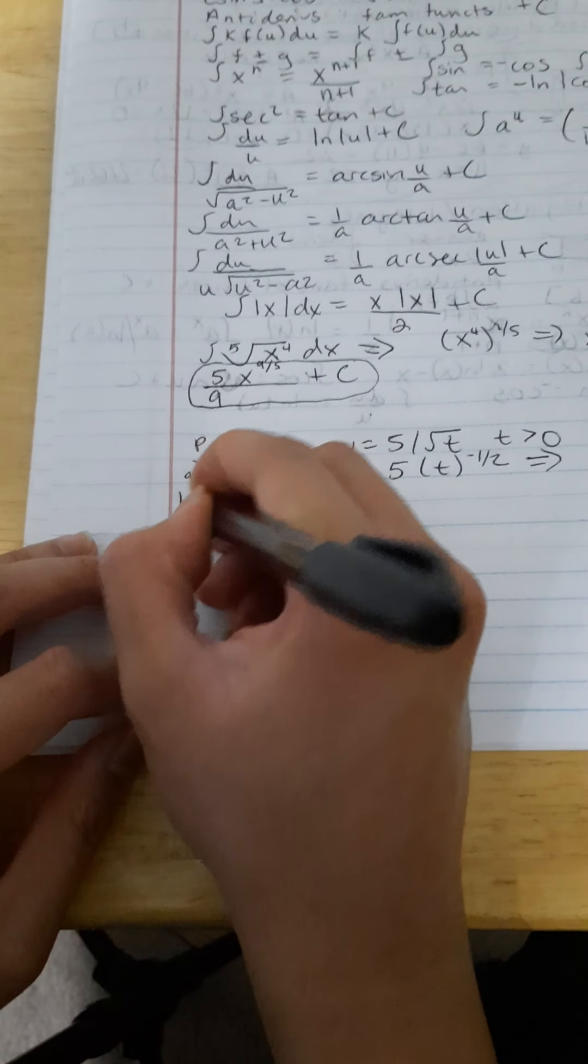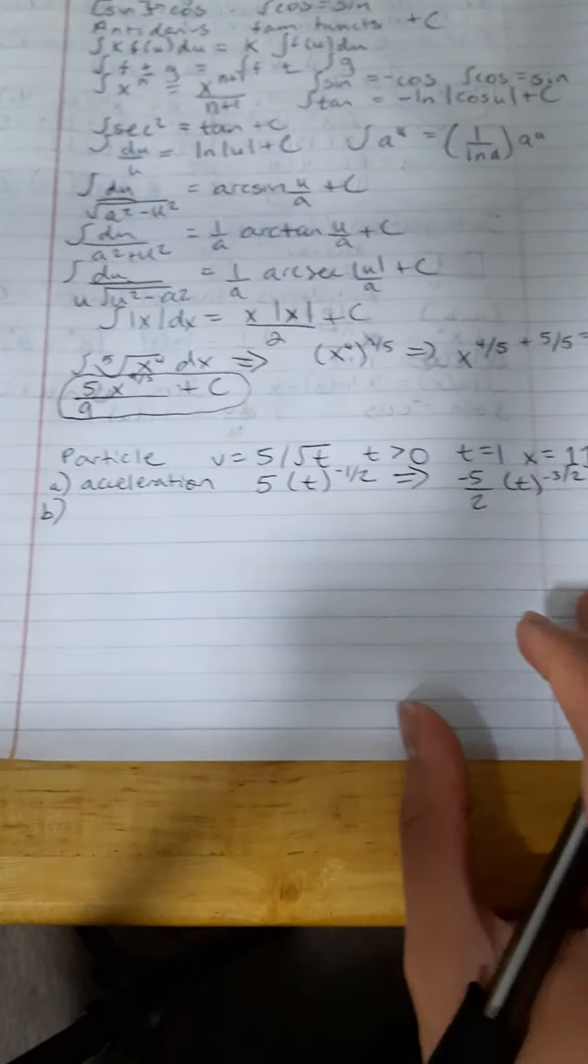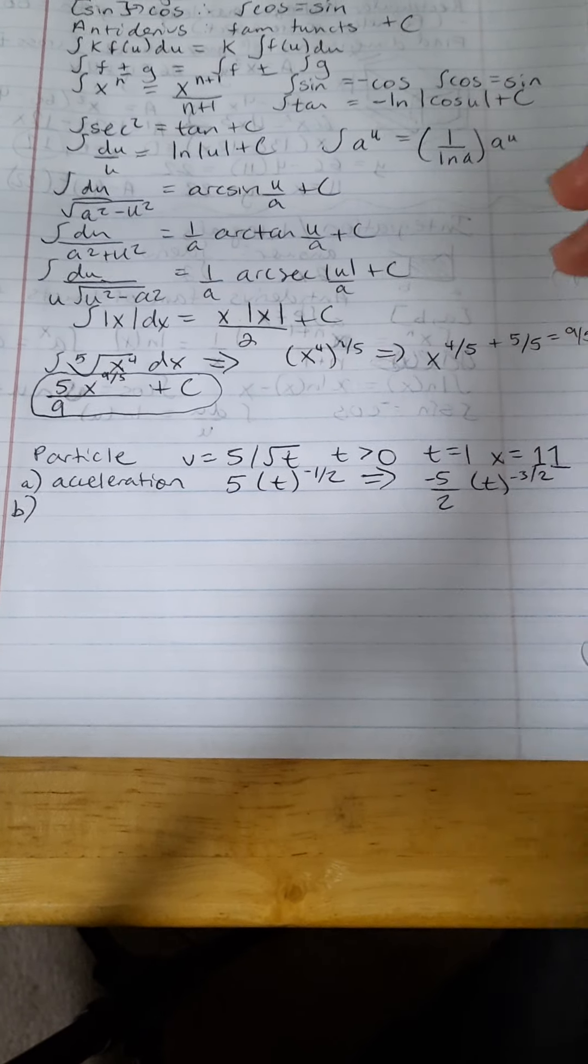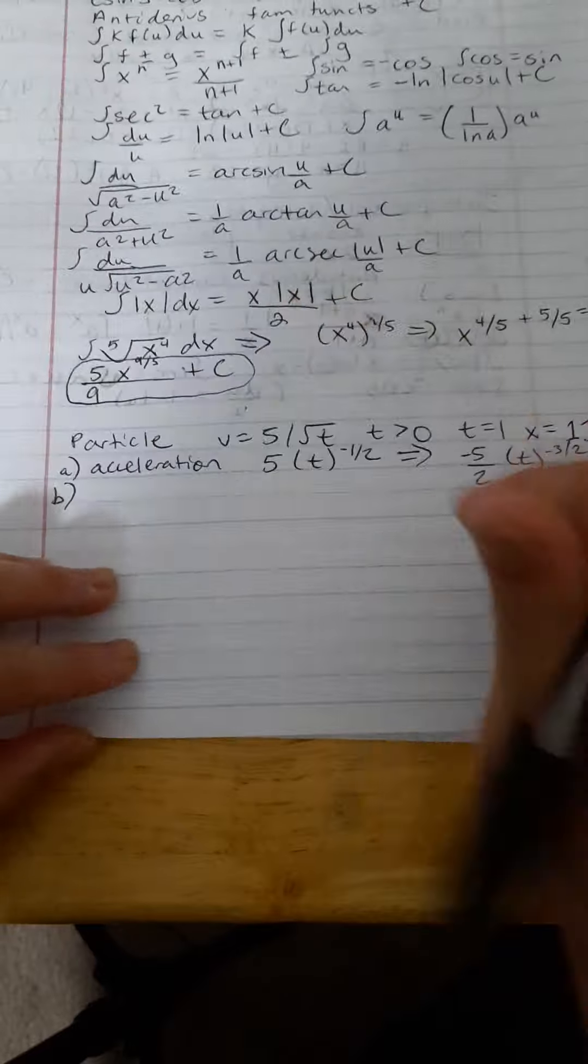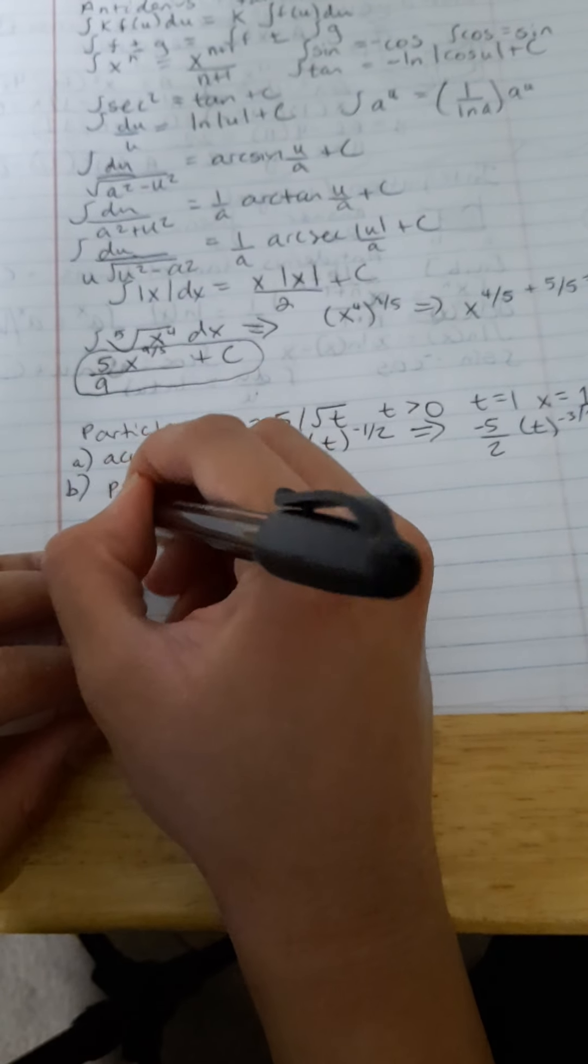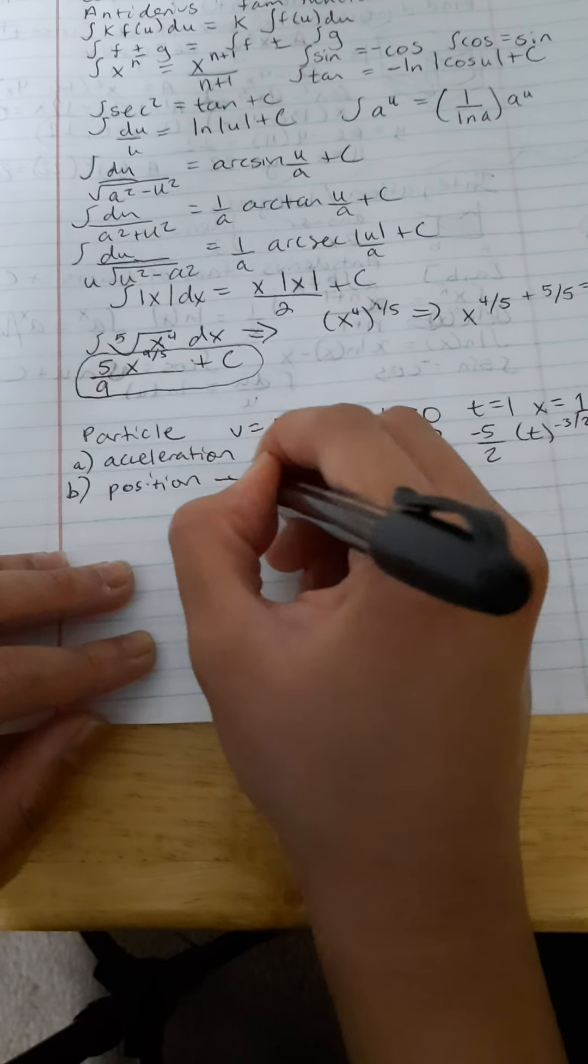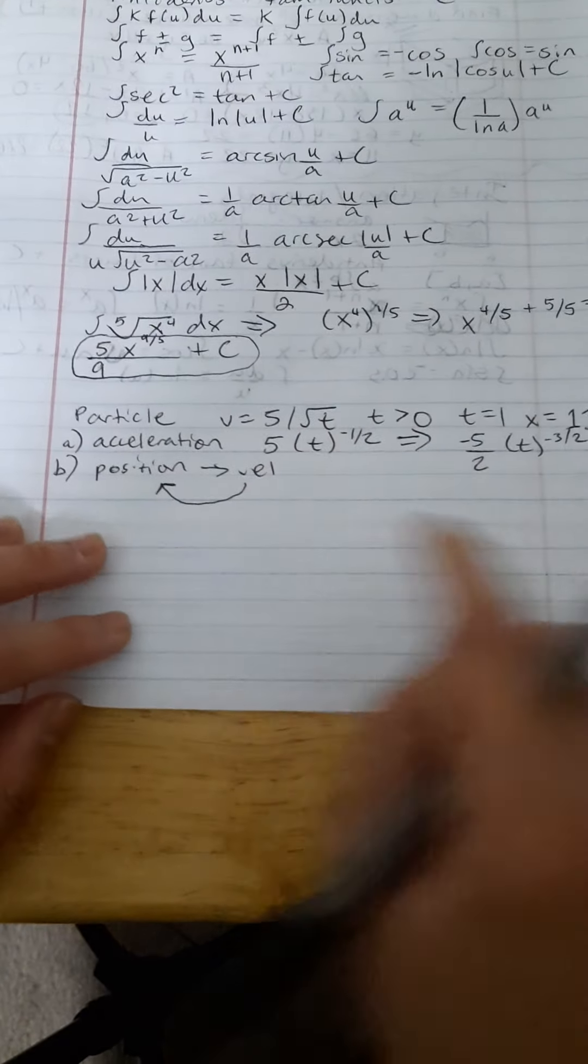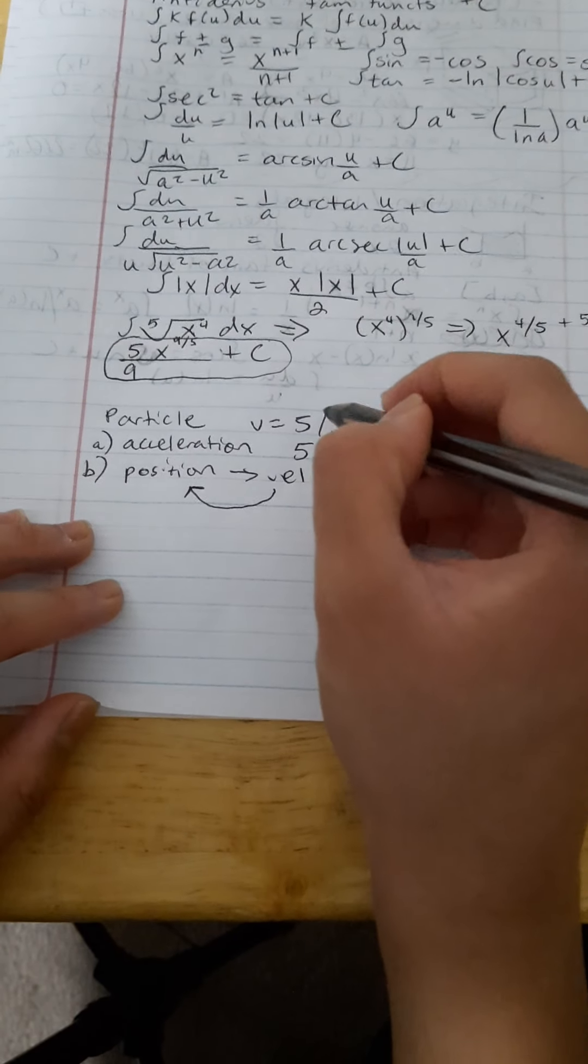so now the position is actually where we're going to be using our integration because we want to get from the velocity to the position. Well, if you remember, position, when you take the derivative of position, it becomes velocity. So, we need to actually backtrack ourselves here to find the position.